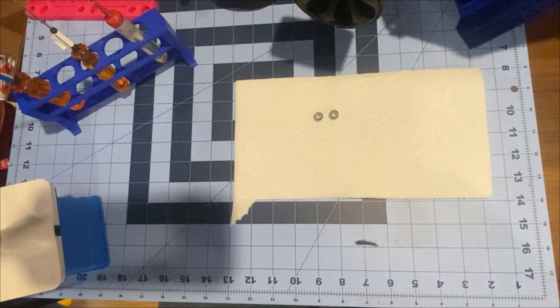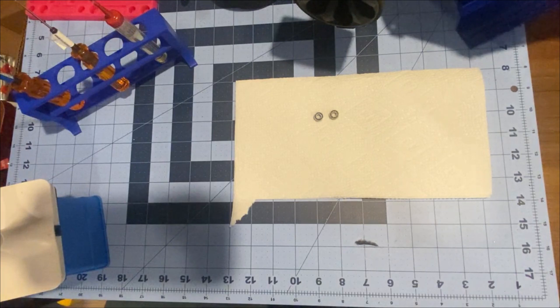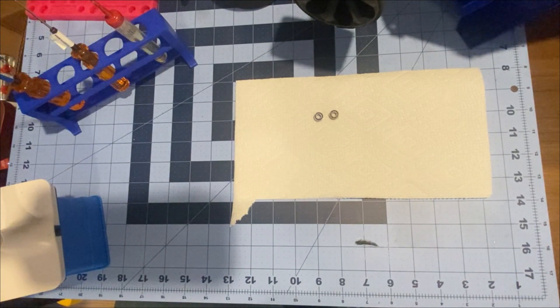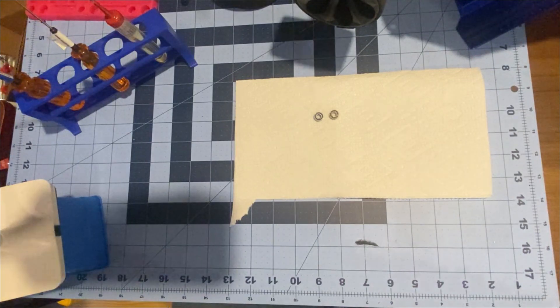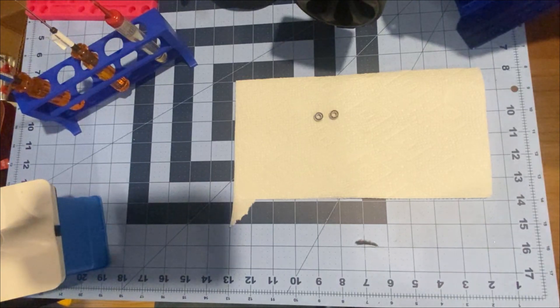I think what we should do is start by defining what drag is. If you Google this, drag is a mechanical force generated by the interaction and contact of a solid body with a fluid, liquid, or gas. The way we can translate that to RC racing is the fluid or gas that our car is interacting with is air. So we want to reduce the amount of drag that our car has because it's slowing us down.